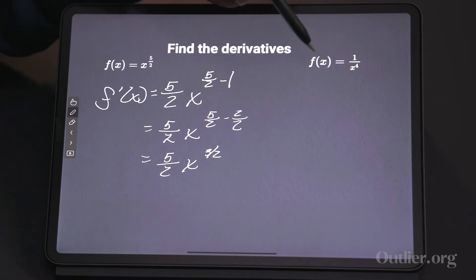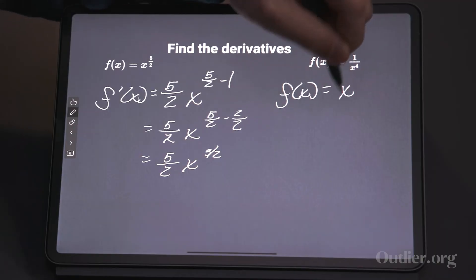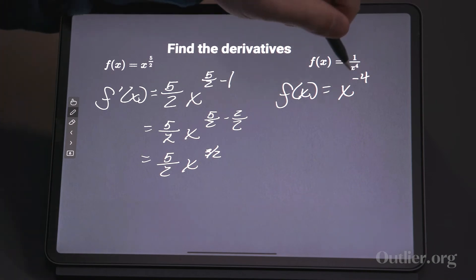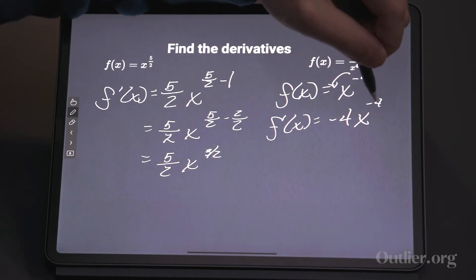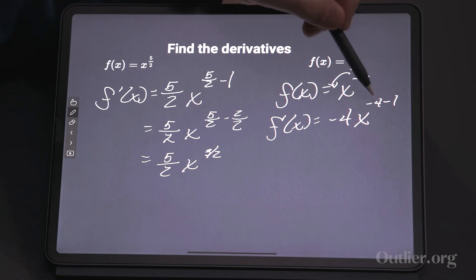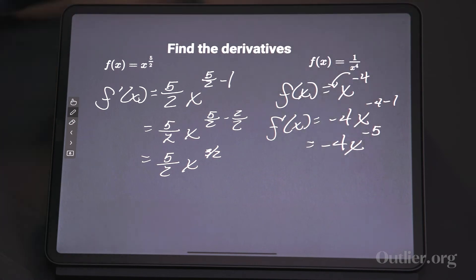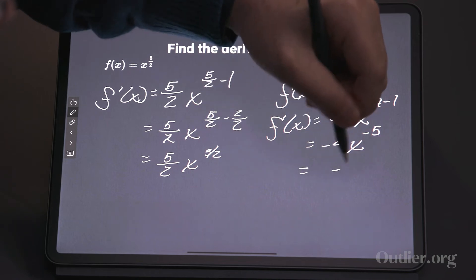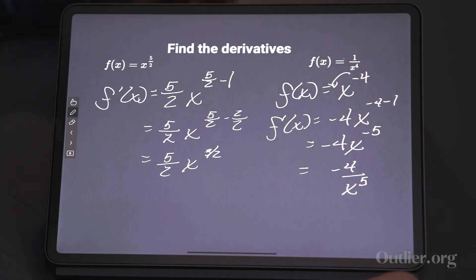How about f of x equals 1 over x to the fourth? That doesn't look like x to some power, but that's where I rewrite it: f of x equals x to the negative 4. That's the same as what we were just looking at. So I bring it down: f prime of x equals negative 4 x to the minus 4 minus 1. Be careful with sign errors here — slow down and do not let your mind relax. Either form of the answer is equivalent, so both are correct.